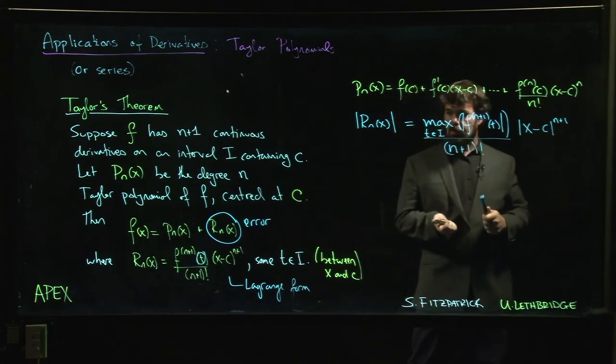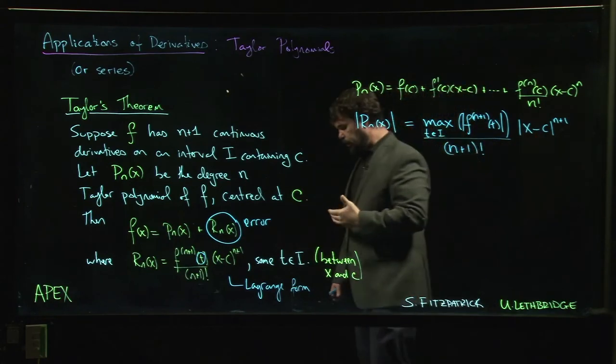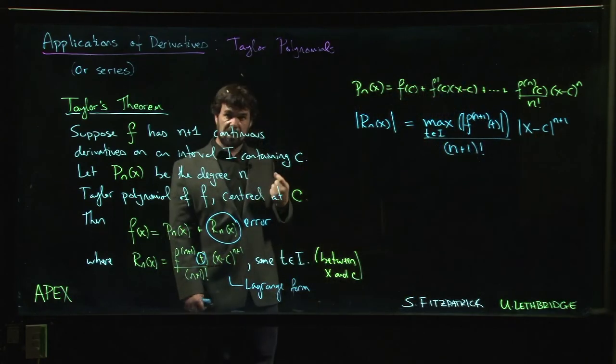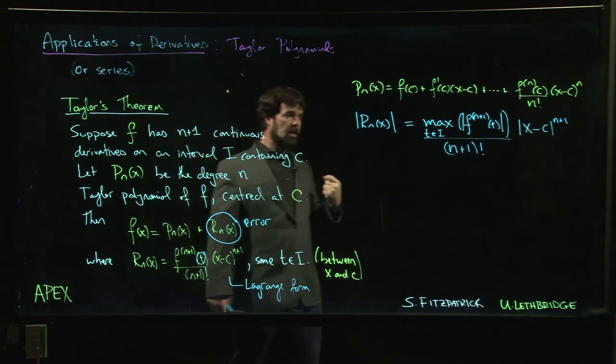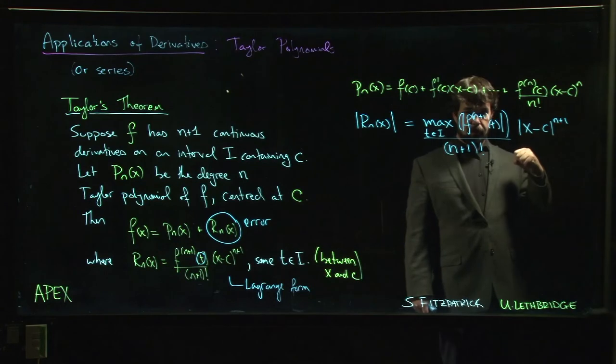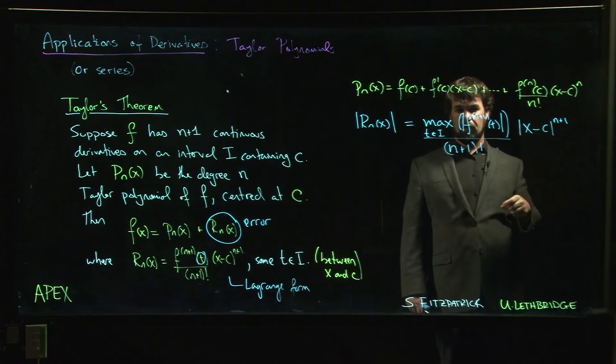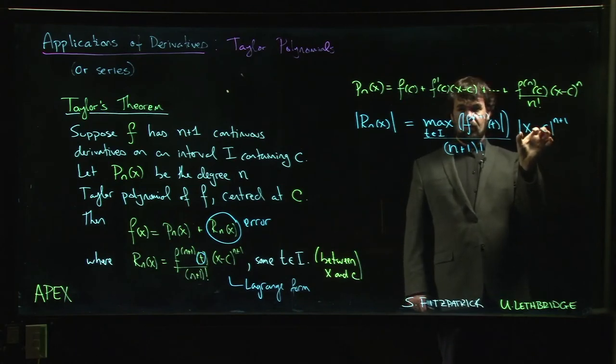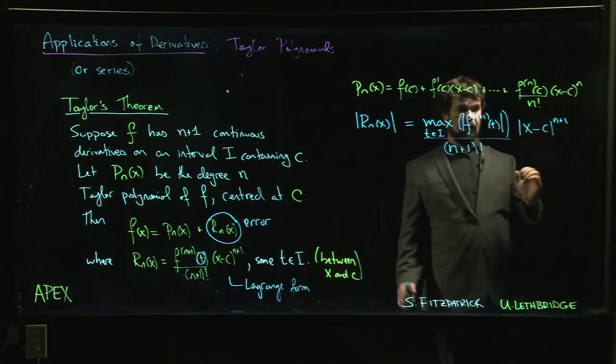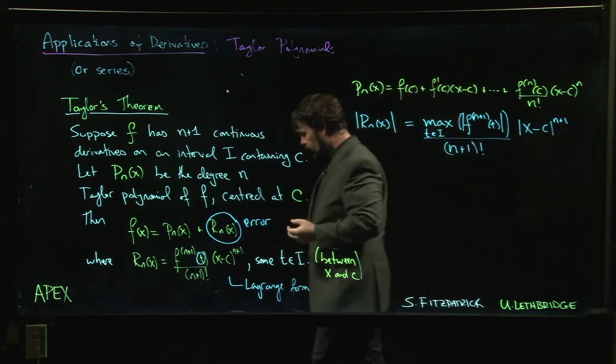If x is fairly close to C, and in particular if the difference between x and C is less than one, then this is going to get smaller as n gets bigger. Just being within one of the center of your polynomial is going to give you some control over this remainder. Staying within a distance of one is going to work.